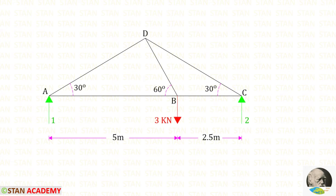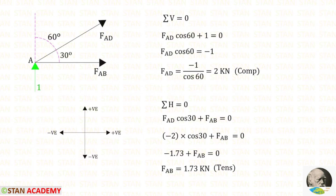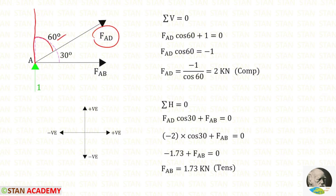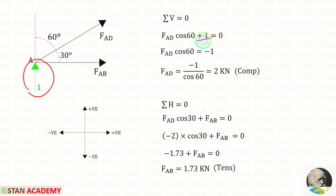Now we are going to find the member forces. First let us take joint A. In joint A we have forces in AB and AD, and also the vertical reaction of 1 kilo Newton. We first apply sigma V equals 0, because when we apply this rule there will be only one unknown, that is FAD. The angle 30 degrees is given; 90 minus 30 gives 60 degrees. We multiply FAD with cos 60. When made vertical it acts upwards, so FAD is positive. The reaction is also positive. Finally FAD gives a negative value, meaning it is compressive.